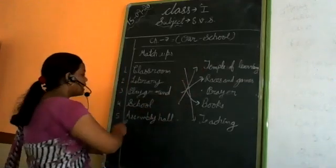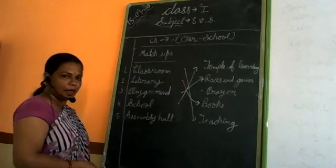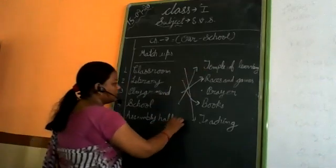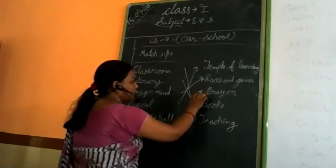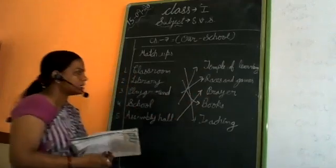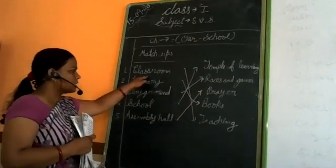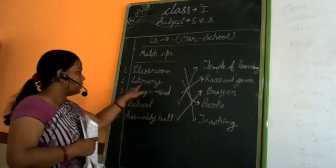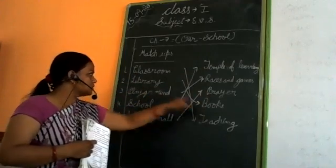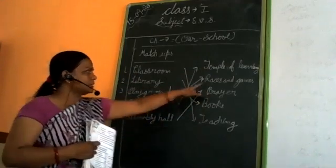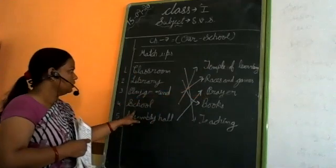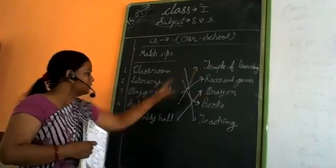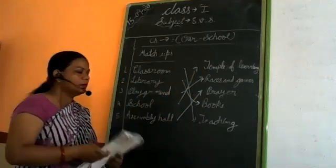Last. Assembly hall. What do we use assembly hall for? For prayer. Assembly hall will match with what? Prayers. Right? Assembly hall, for prayer. Classroom, teaching. Library, books. Playground, races and games. School, temple of learning. And assembly hall, prayers.